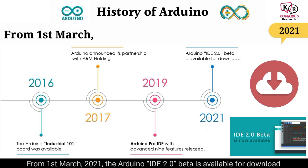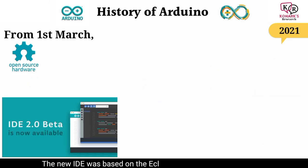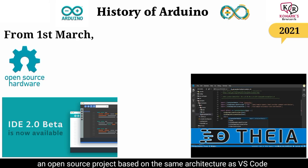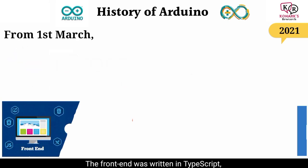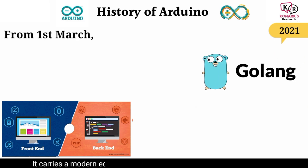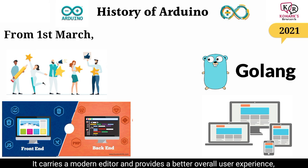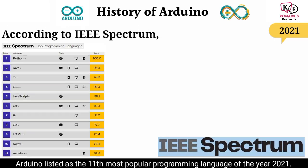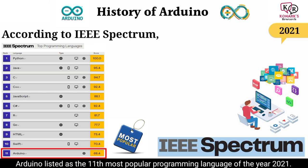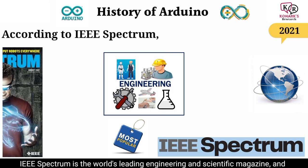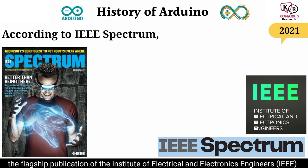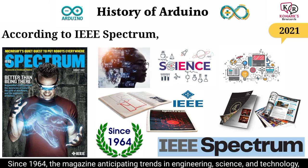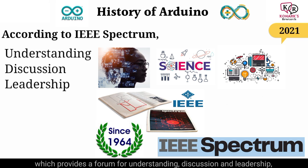From 1 March 2021, the Arduino IDE 2.0 beta became available for download and its code repositories became open source. The new IDE was based on the Eclipse Theia framework — an open source project based on the same architecture as VS Code. The front end was written in TypeScript while most of the back end was written in Go. It carries a modern editor and provides a better overall user experience thanks to a responsive interface and faster compilation time. According to IEEE Spectrum, Arduino was listed as the 11th most popular programming language of 2021. IEEE Spectrum is the world's leading engineering and scientific magazine and the flagship publication of the IEEE since 1964, read by over 3 million engineers worldwide.